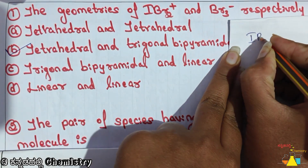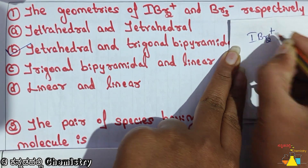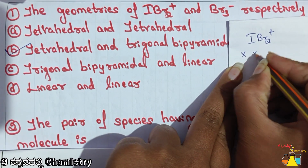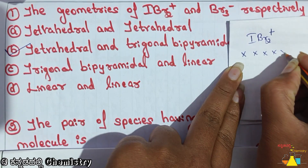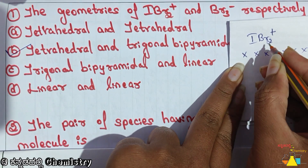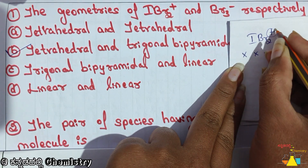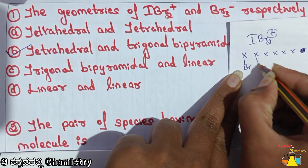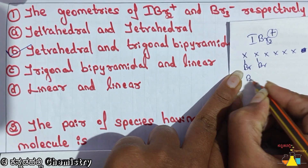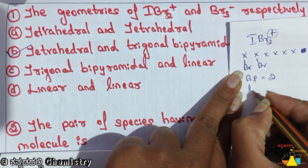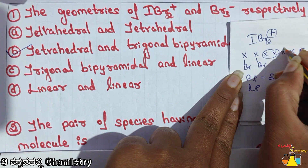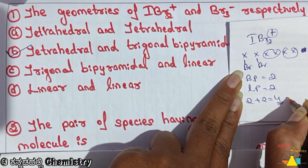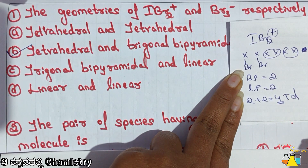Halogen family — outermost electrons: total 7 electrons — 1, 2, 3, 4, 5, 6, 7. Bromine has 2 bromines. A plus charge means 1 electron is removed. So bond pairs is equal to 2 and lone pairs is equal to 2. So 2 plus 2 which is equal to 4 — 4 is tetrahedral.